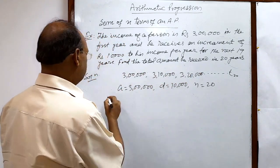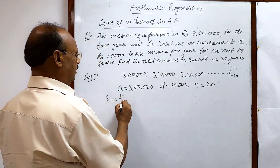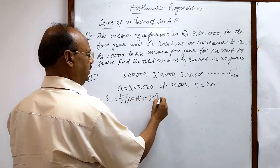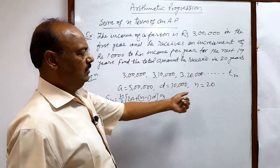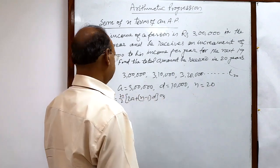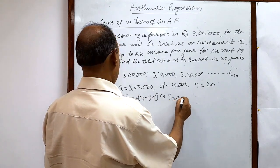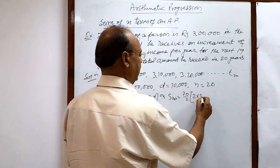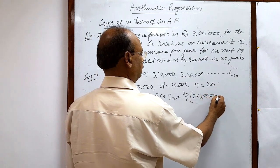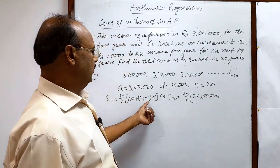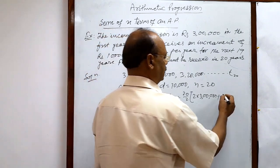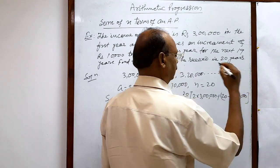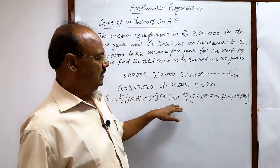So we will use the formula: S_n = n/2[2a + (n-1)d]. Now n is equal to 20, so S_20 = 20/2 × [2 × 3 lakhs + (20-1) × 10,000]. Now we will solve it and simplify it.